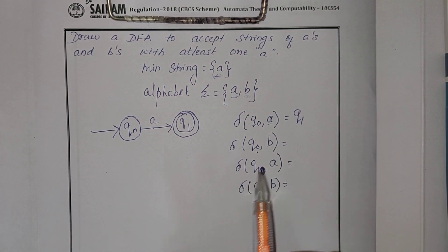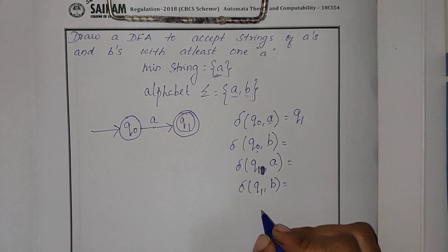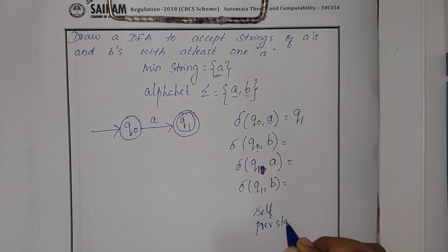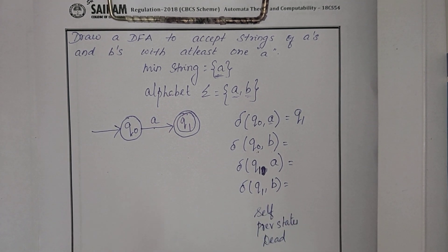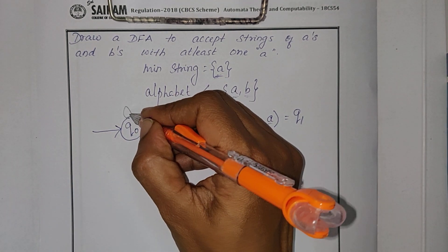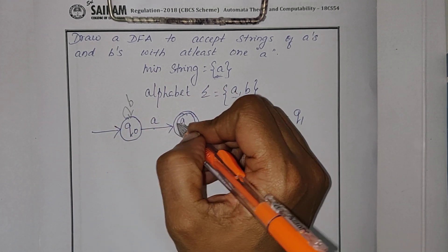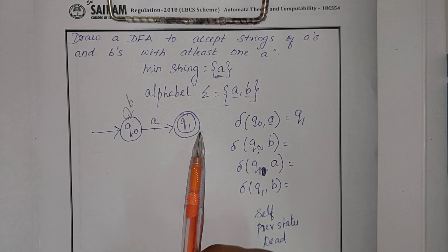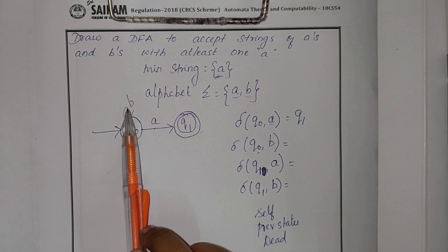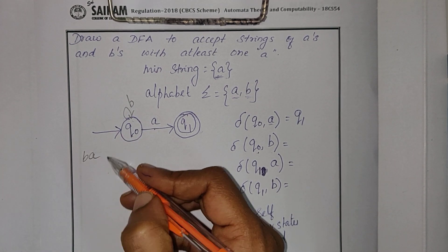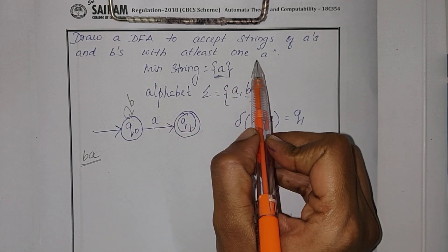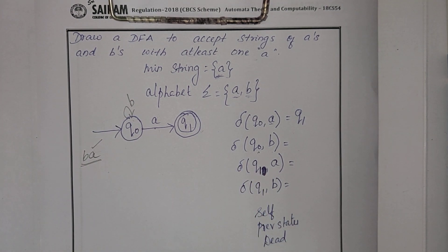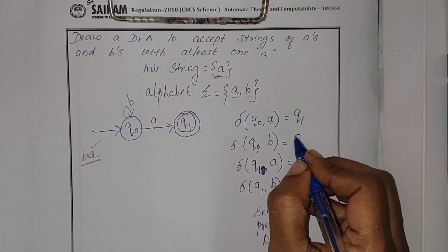While finding new transitions, I check for self first, then for previous states, and if the condition fails I move to a dead state. For Q0 comma B, I try a self-loop. To verify, I write all strings from start state to final state: B, A and B, A. The condition is at least one A — I have at least one A, so this marking is correct. Therefore Q0 comma B is Q0.